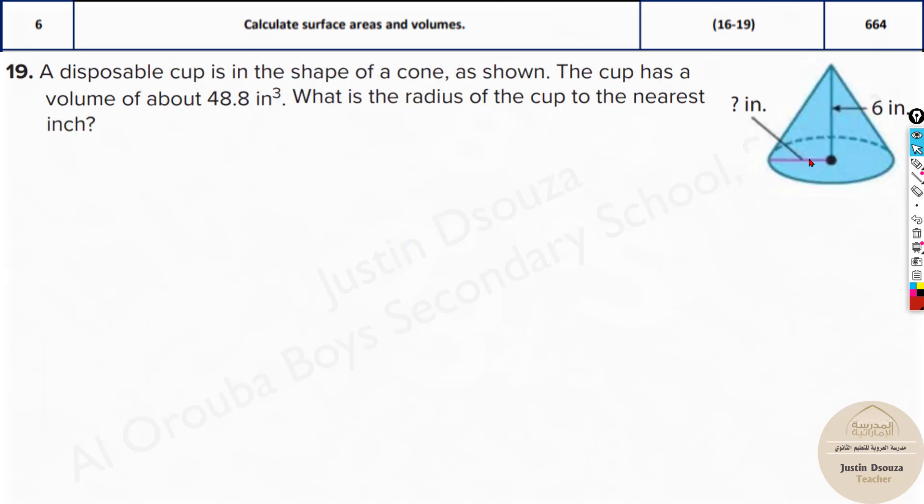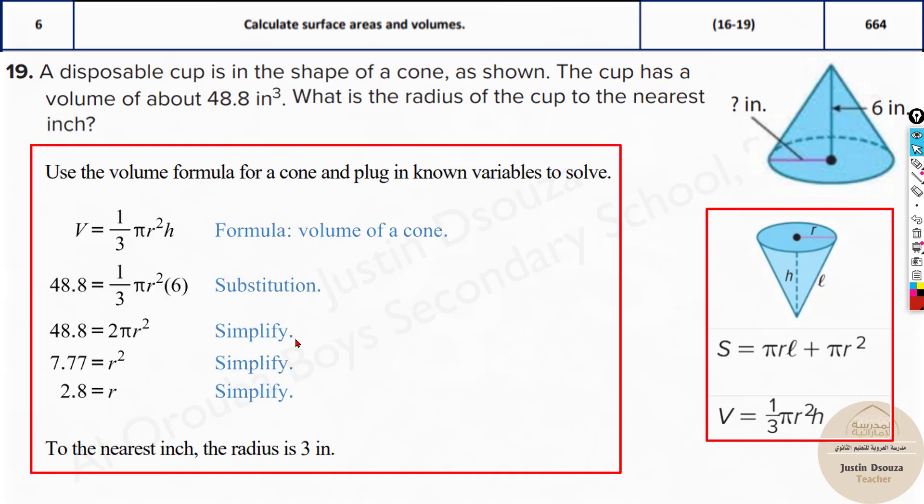Here we have a cone. The height is given as 6 inches and they have also given the volume. They are asking for the radius. The radius is unknown. Substitute all that is known: volume is given, height is given. Only radius is missing, one variable. Solve it and you will get the answer.